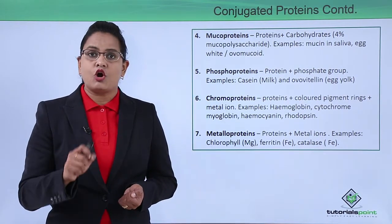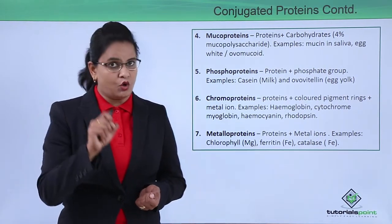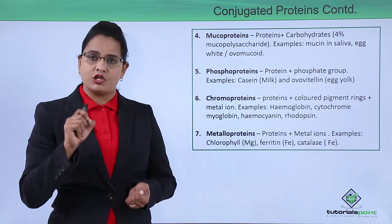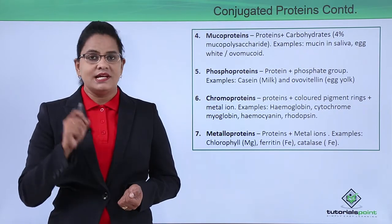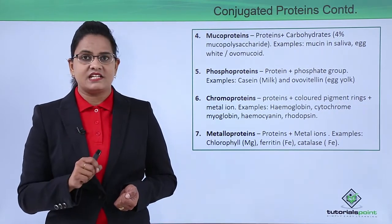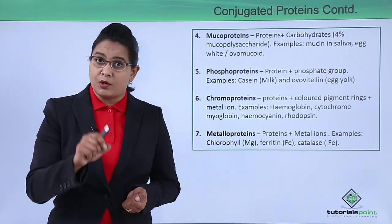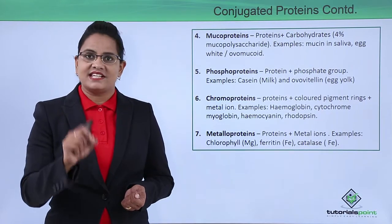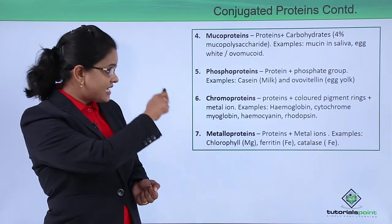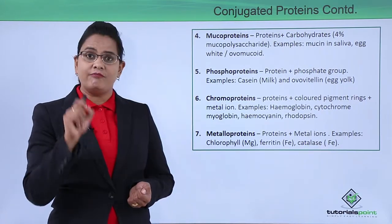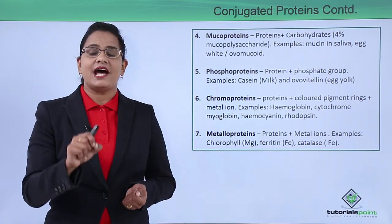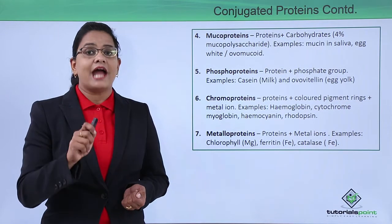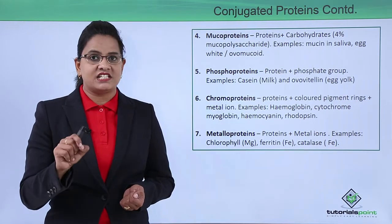The next category is phosphoproteins. As the name suggests, these are proteins associated with a phosphate group. The example is casein, the protein of milk — it is a phosphoprotein. Ovovitellin, that is the egg yolk, is also a phosphoprotein.